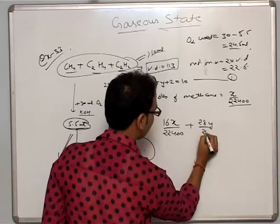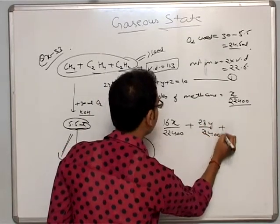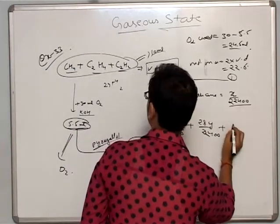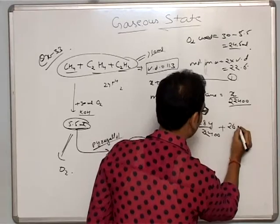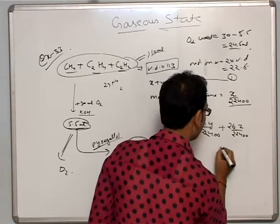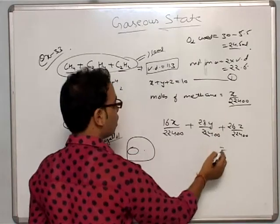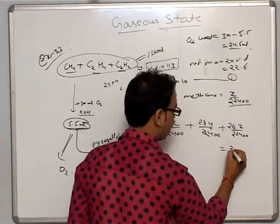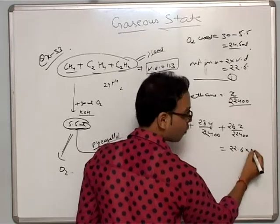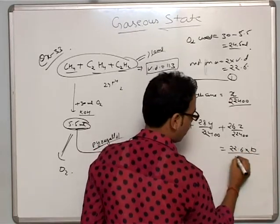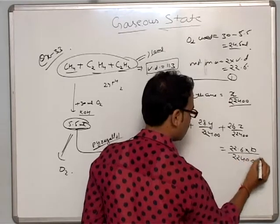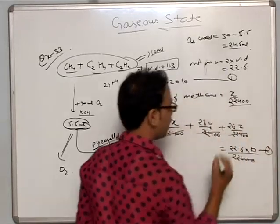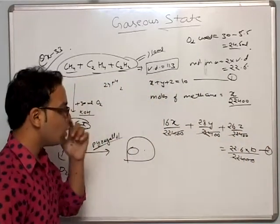Plus 26z/22400 (molecular mass of C2H2 = 24 + 2 = 26) equals the mixture's molecular mass 22.6 times volume 10 ml divided by 22400. The 22400 cancels out, giving us the second equation. We have now obtained two equations for three variables.